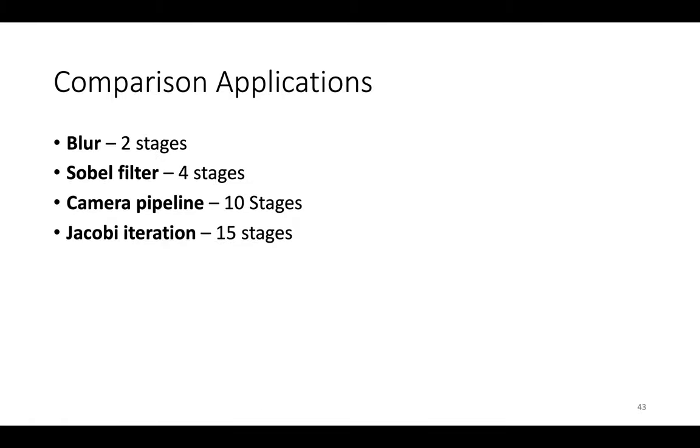Unfortunately, there aren't many large unirate image processing applications; most with dozens or hundreds of stages include pyramids with upsampling or downsampling. For comparison, we have modest-size apps: a blur with two stages, where stage means loop nest or statement.